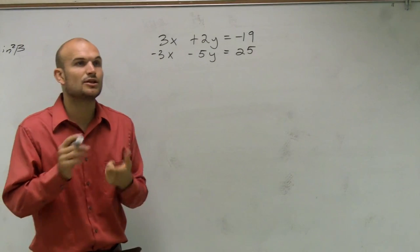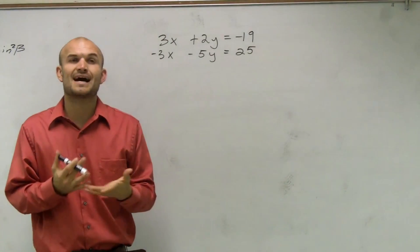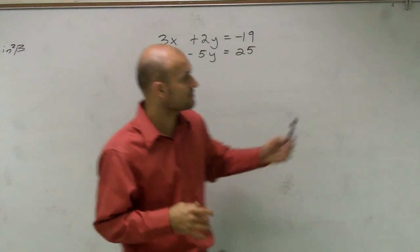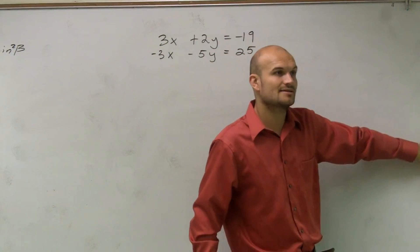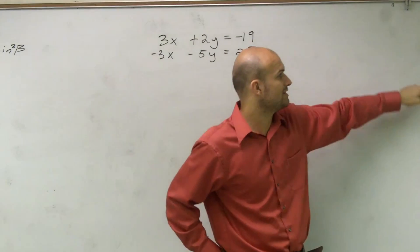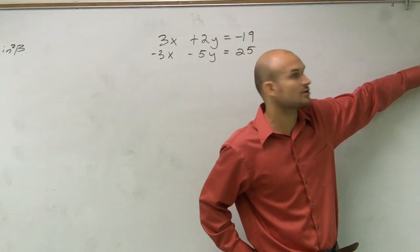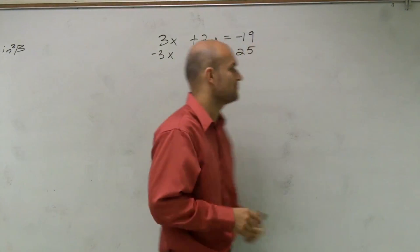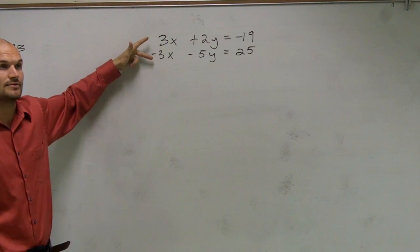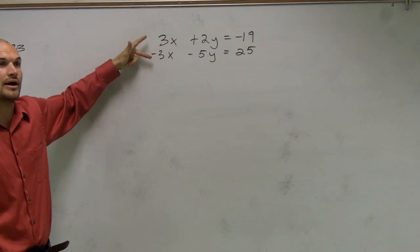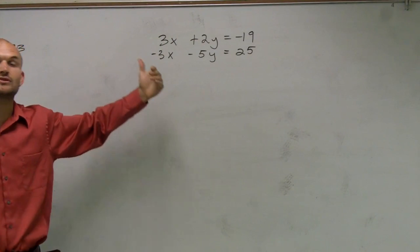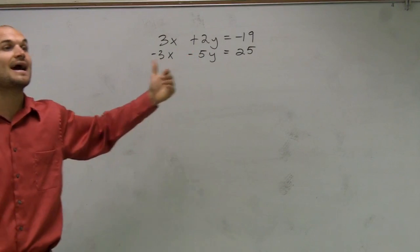The next thing is we need to look at what are the signs of those coefficients. If the coefficients are exactly the same, we're going to use elimination by subtraction. But when the signs are opposite, we're going to use elimination by addition. So I have a positive 3 and a negative 3 — they're opposite signs. So I'm going to eliminate these equations by adding.